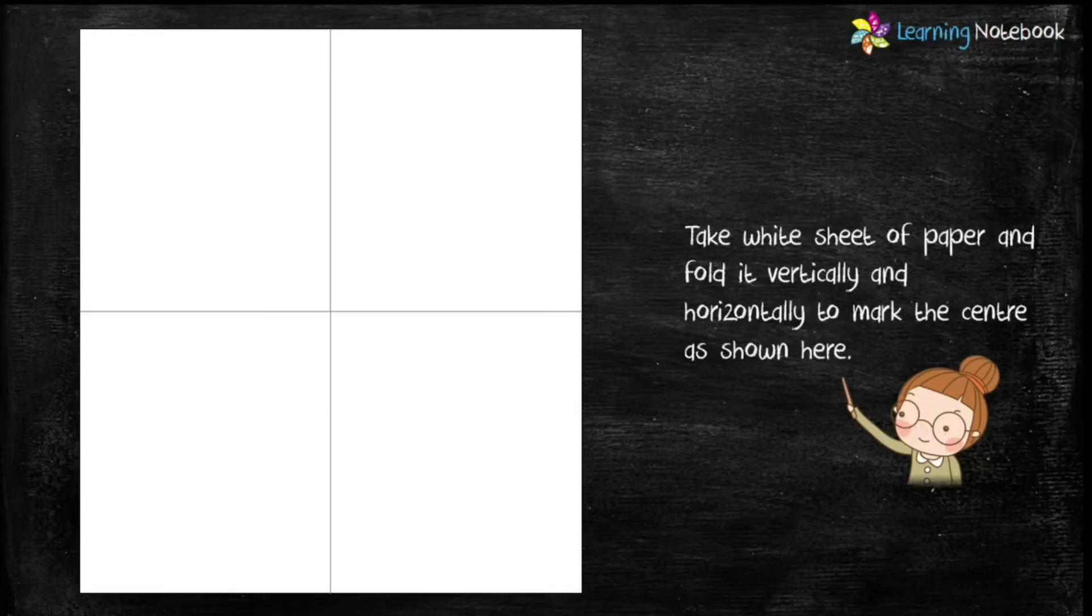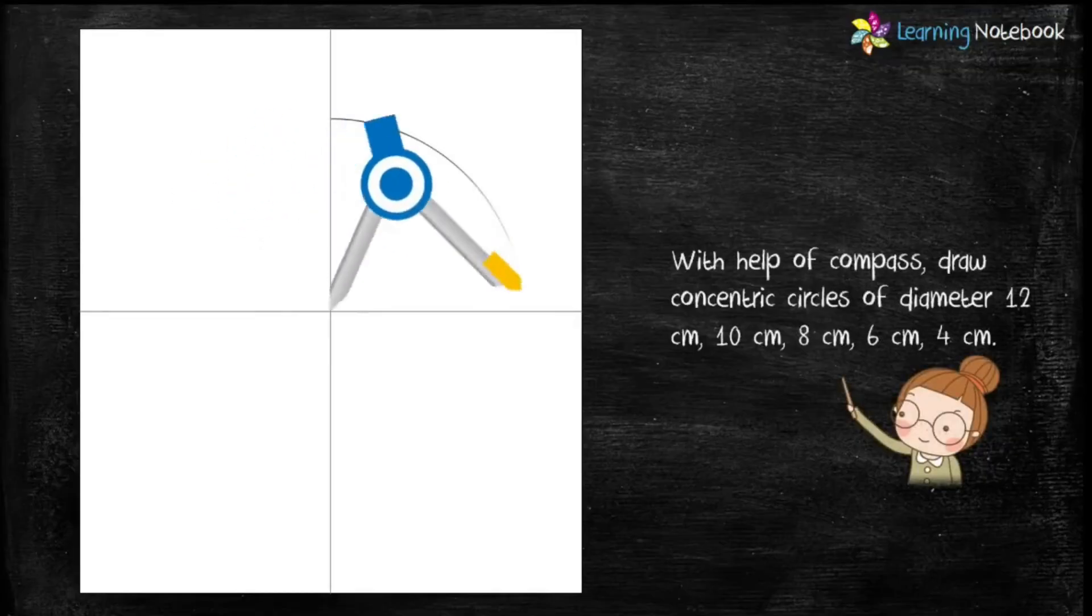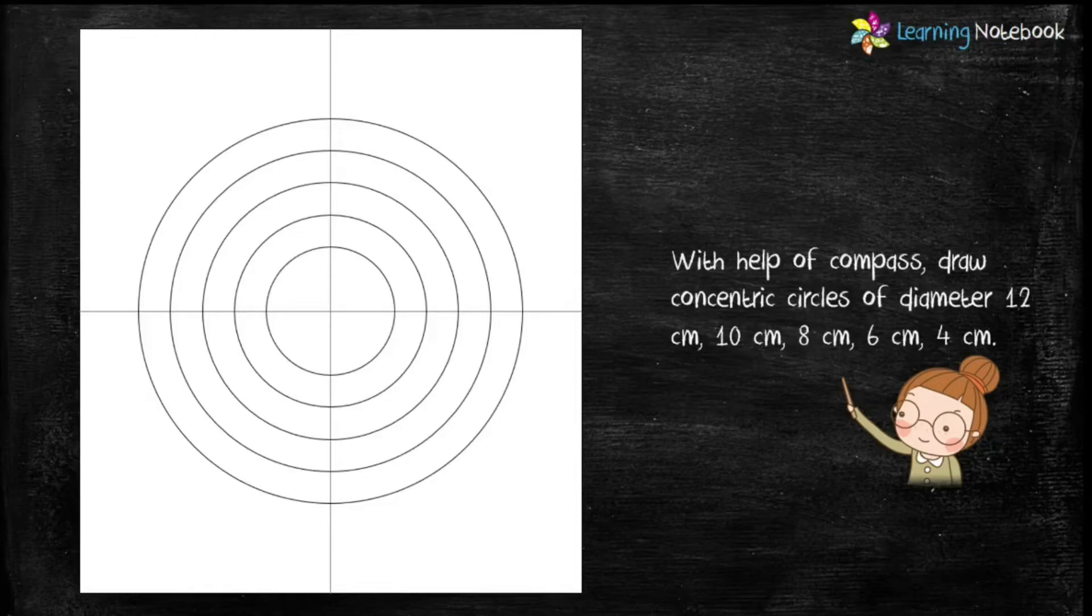Take a white sheet of paper and fold it vertically and horizontally to mark the center as shown here. Now with the help of a compass, draw concentric circles of diameter 12 cm, 10 cm, 8 cm, 6 cm, and 4 cm.